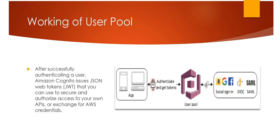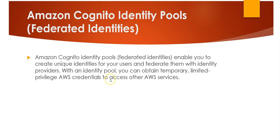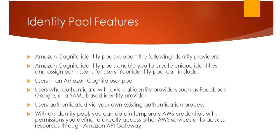Amazon Cognito identity pools, also known as federated identities, enable you to create unique identities for your users and federate them with identity providers. With an identity pool, you can obtain temporary, limited-privilege AWS credentials to access other AWS services.